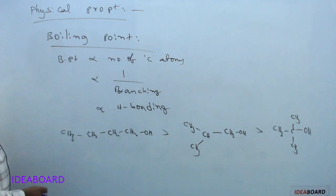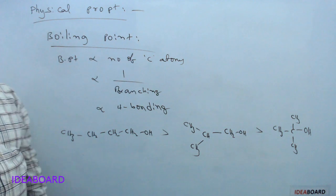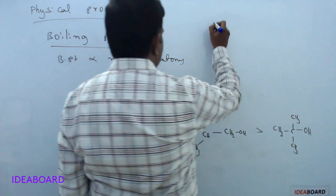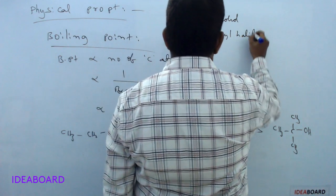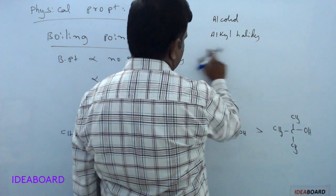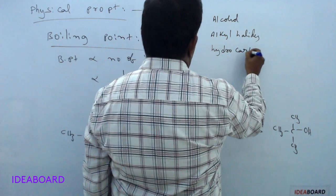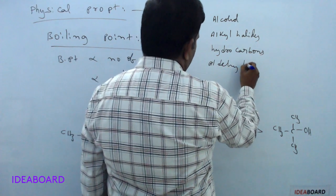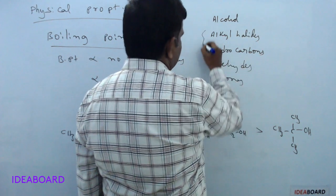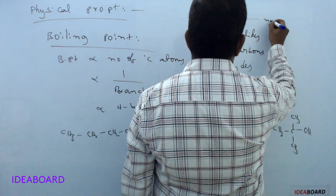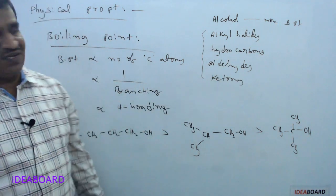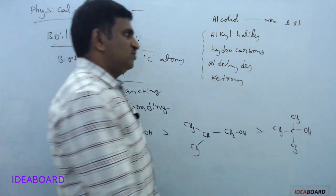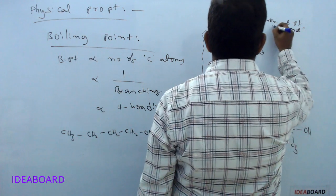As carbon atom number increases from methyl to ethyl to propyl to butyl, boiling point values increase. When comparing alcohols to alkyl halides, alkanes, hydrocarbons, aldehydes, and ketones, alcohols have higher boiling point values than all these compounds due to the formation of strong hydrogen bonding.